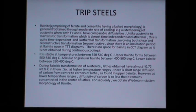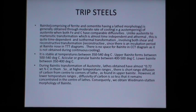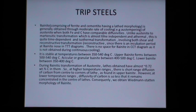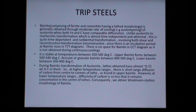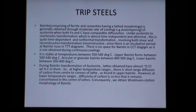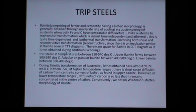Bainite comprises ferrite and cementite but has a lath morphology. It is generally obtained through moderate rate of cooling, for example by austempering of austenite, when both iron and carbon have comparable diffusivities. Unlike austenite-to-martensite transformation which is time-independent and athermal, bainitic transformation is time-dependent and isothermal, involving both shear and reconstructive transformations. There is an incubation period at the bainite nose in the TTT diagram.